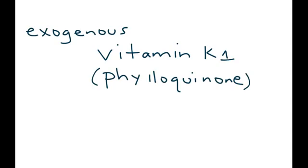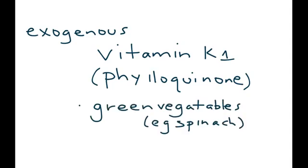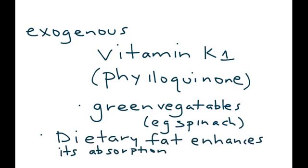Vitamin K1 is obtained from food such as green vegetables like spinach. An important point to remember is that dietary fat will help enhance the absorption of vitamin K1. This is important because in medical conditions where people have malabsorption of fat, they will also develop vitamin K deficiency.